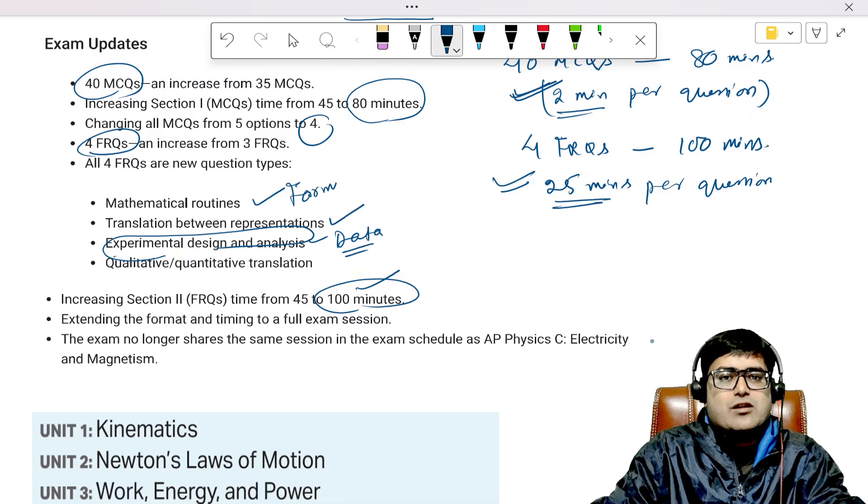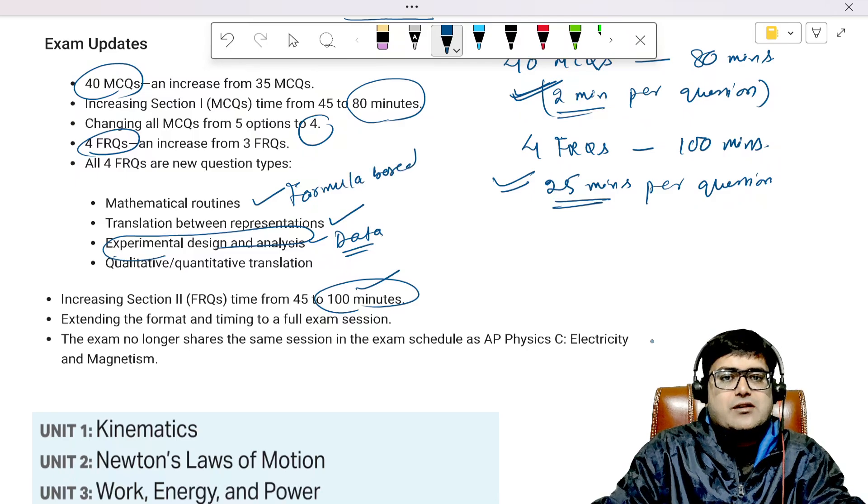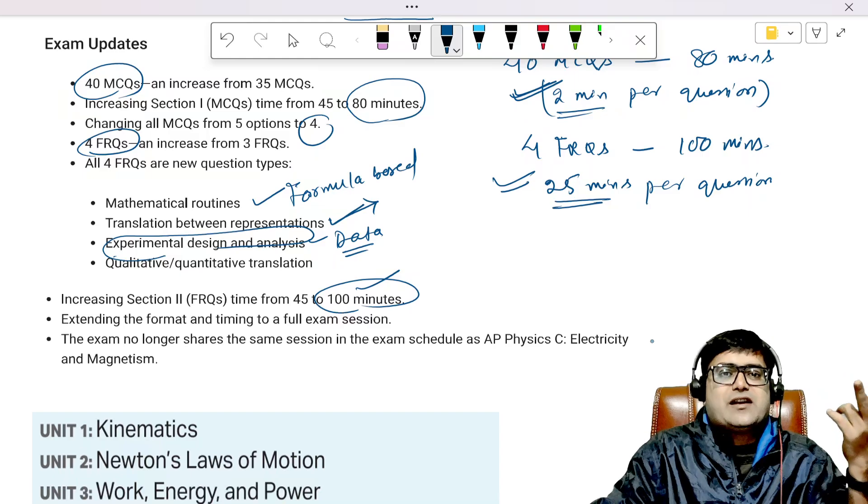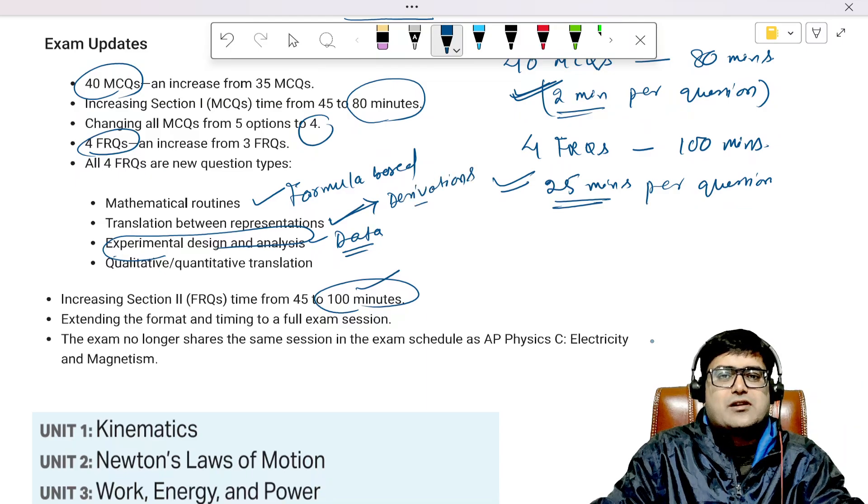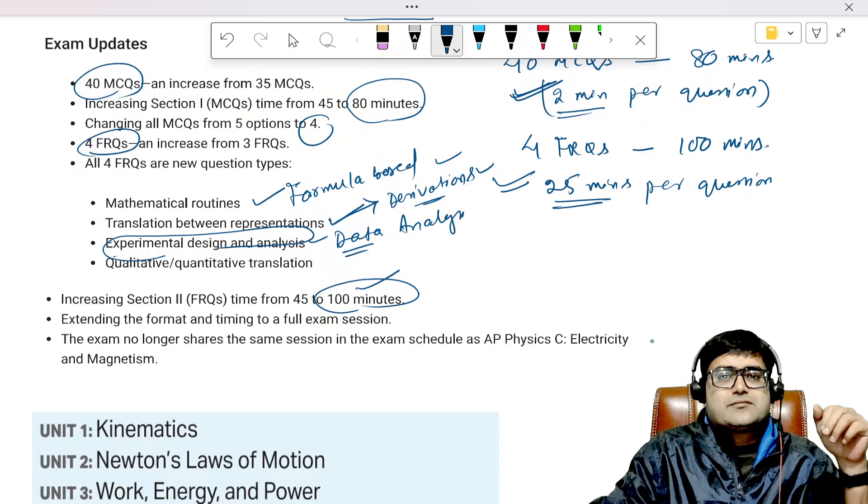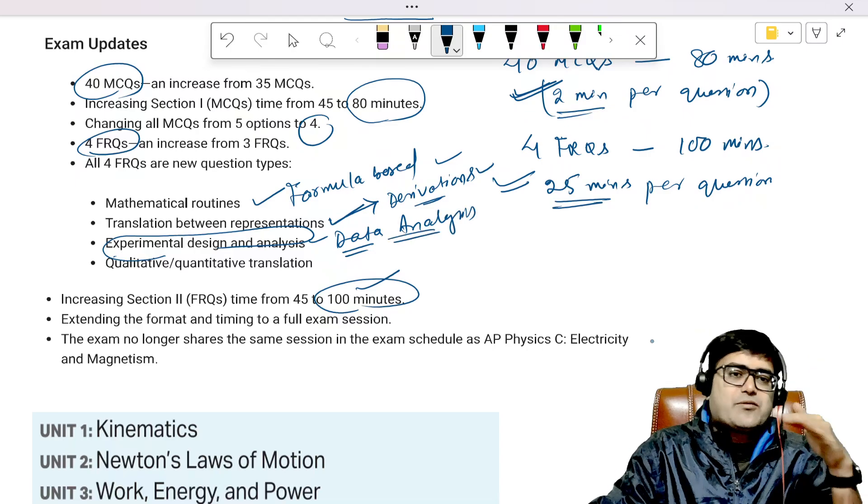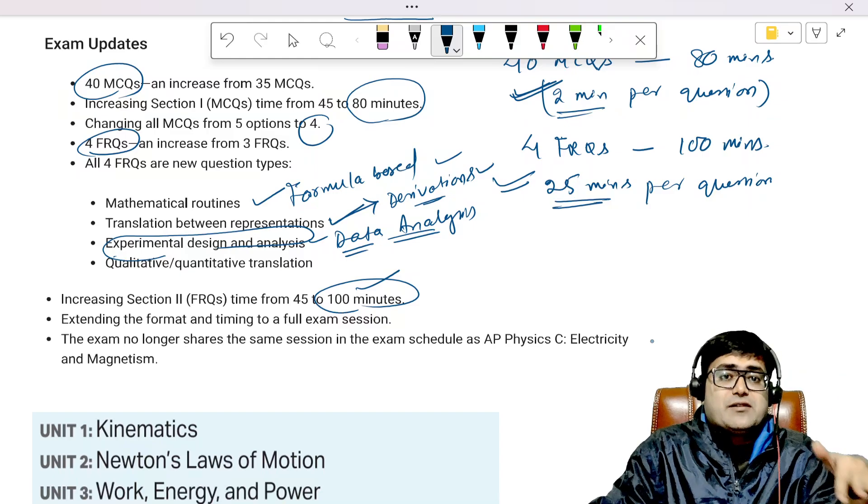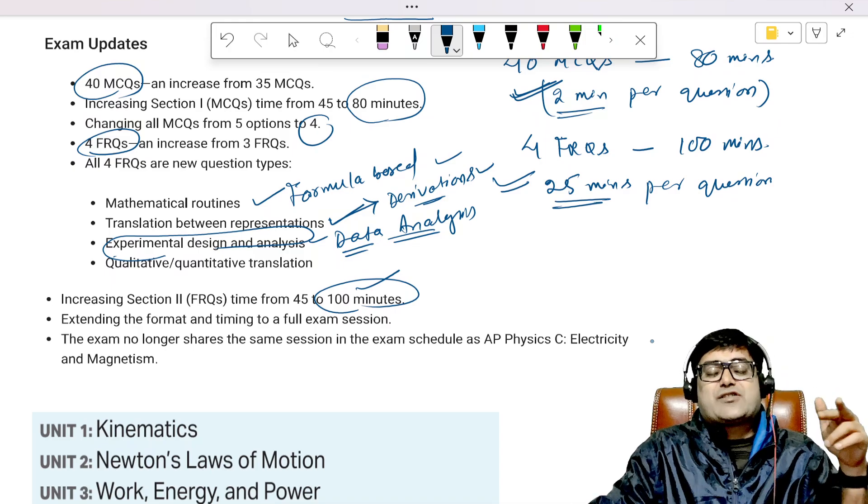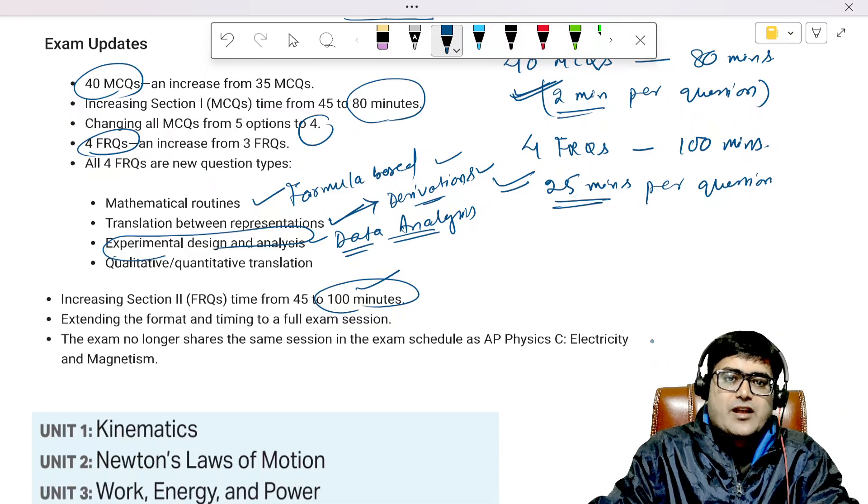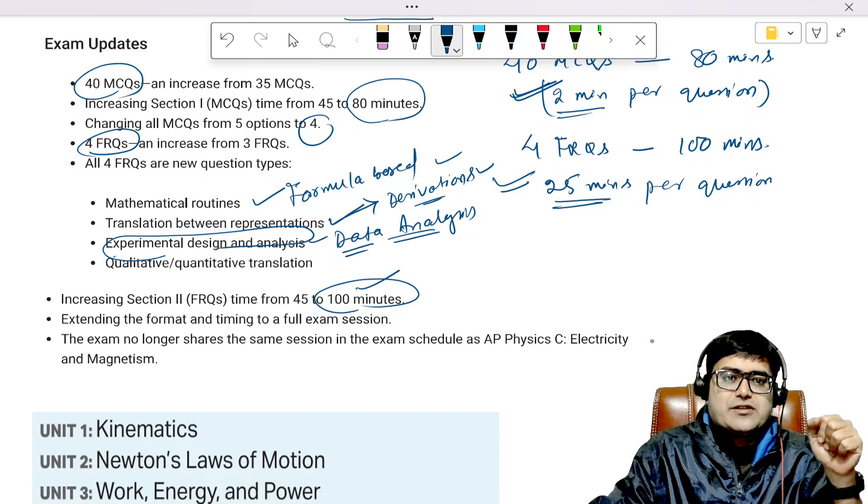Simple formula-based, these are all formula-based. Translation between representation is where it deals with derivation a little bit, not long derivations, but they are inspired by derivation. Data analysis means you will be given a graph, you have to interpret the graph and find out the value of a quantity or the rate at which it is changing from the graph. Or you might be given how a certain thing varies and you will have to draw a qualitative diagram, a qualitative graph for that particular question.